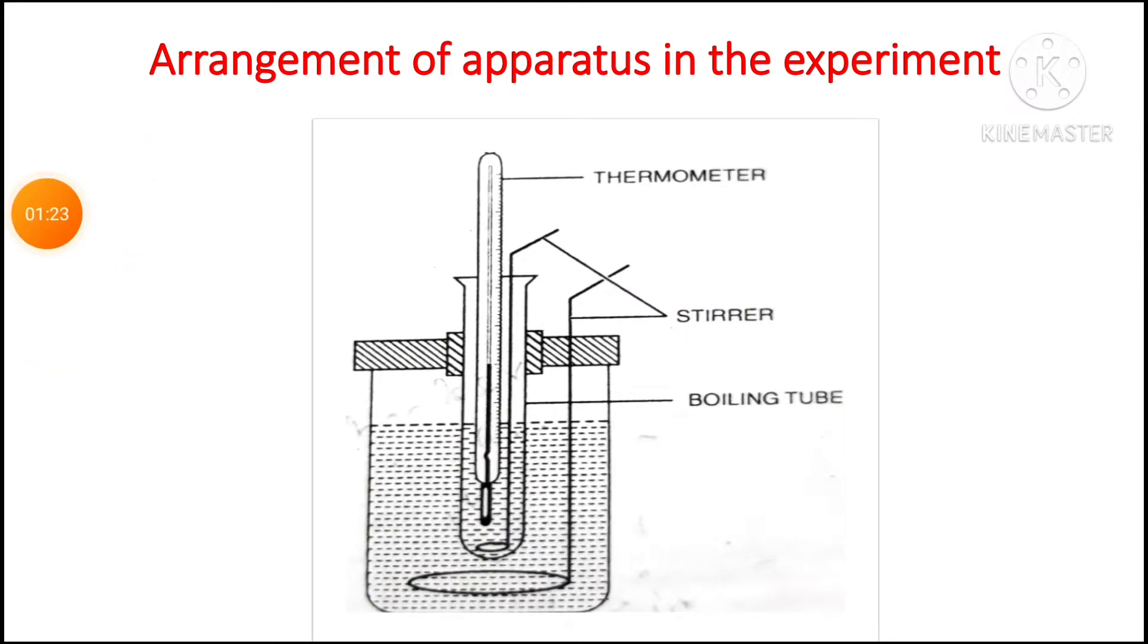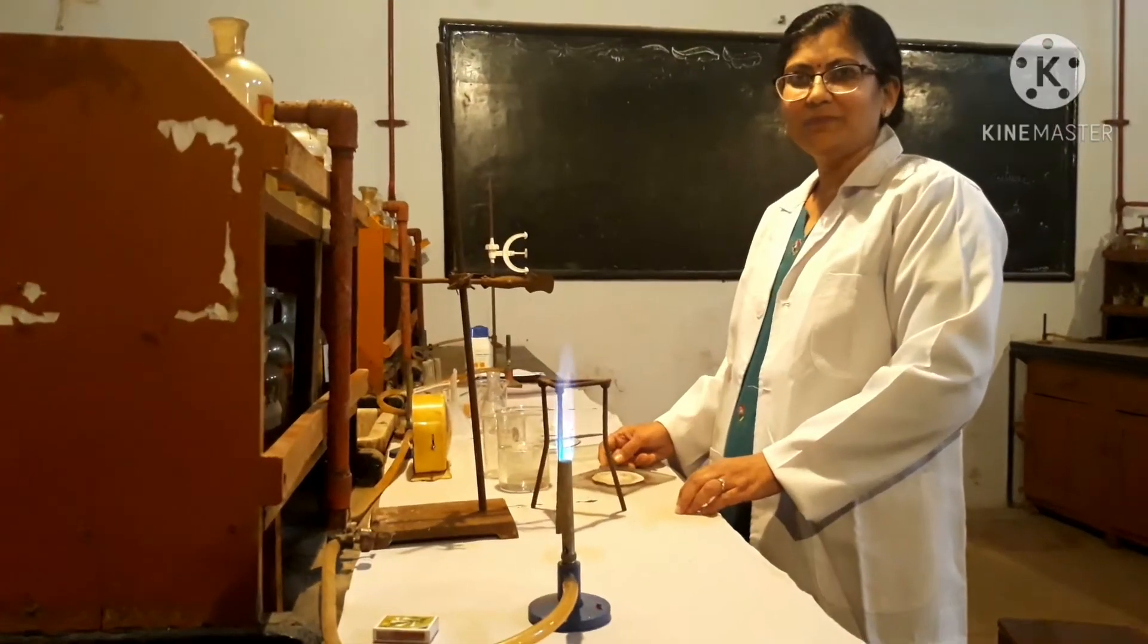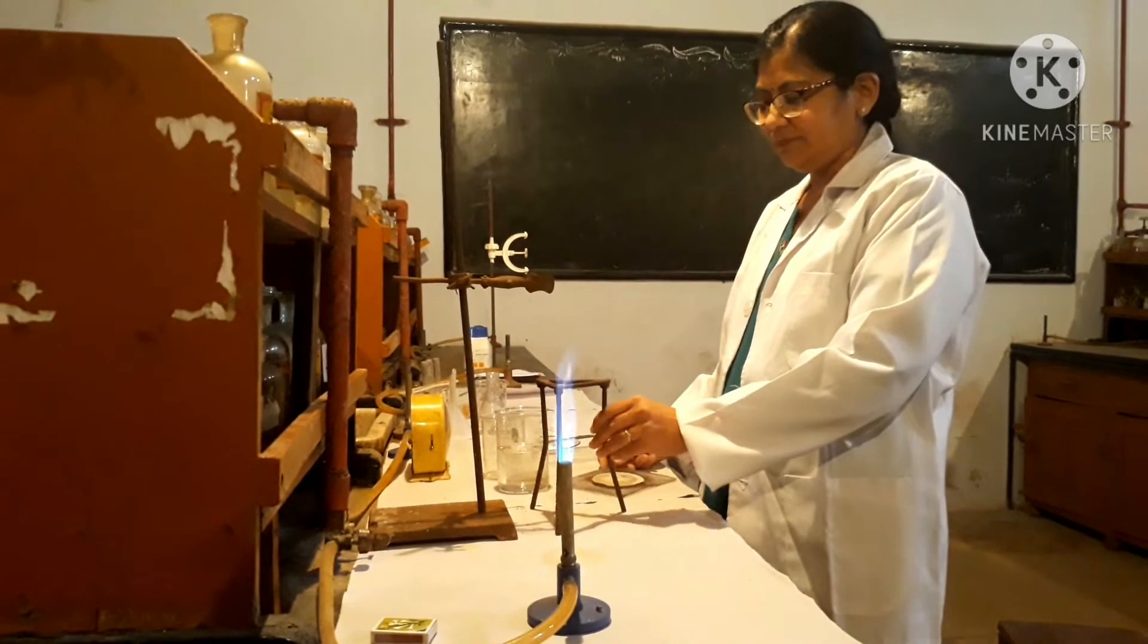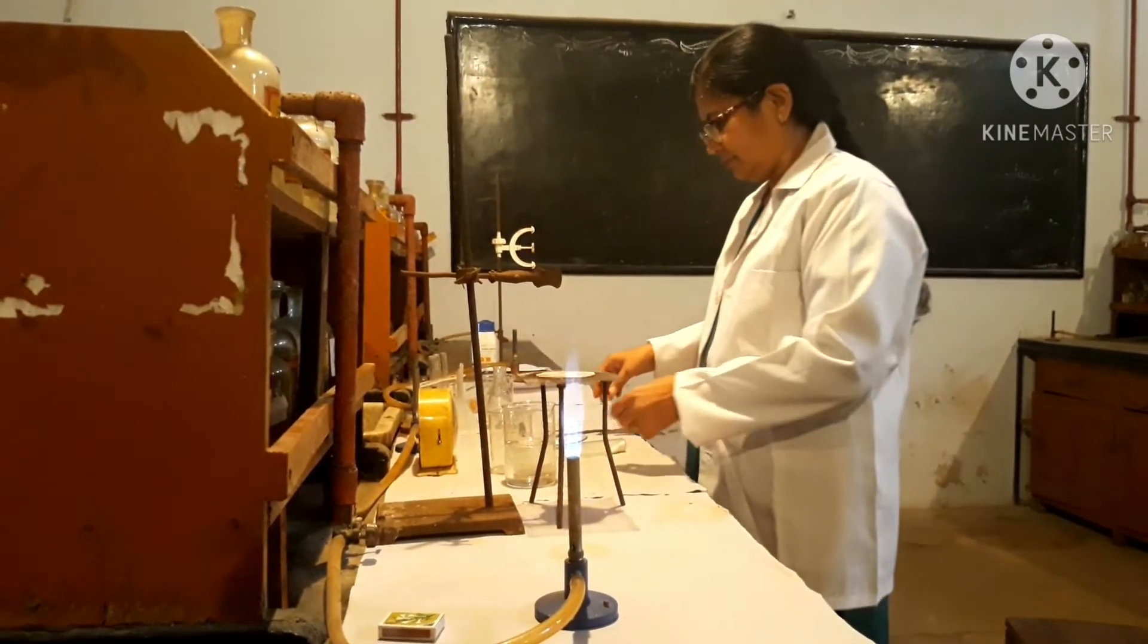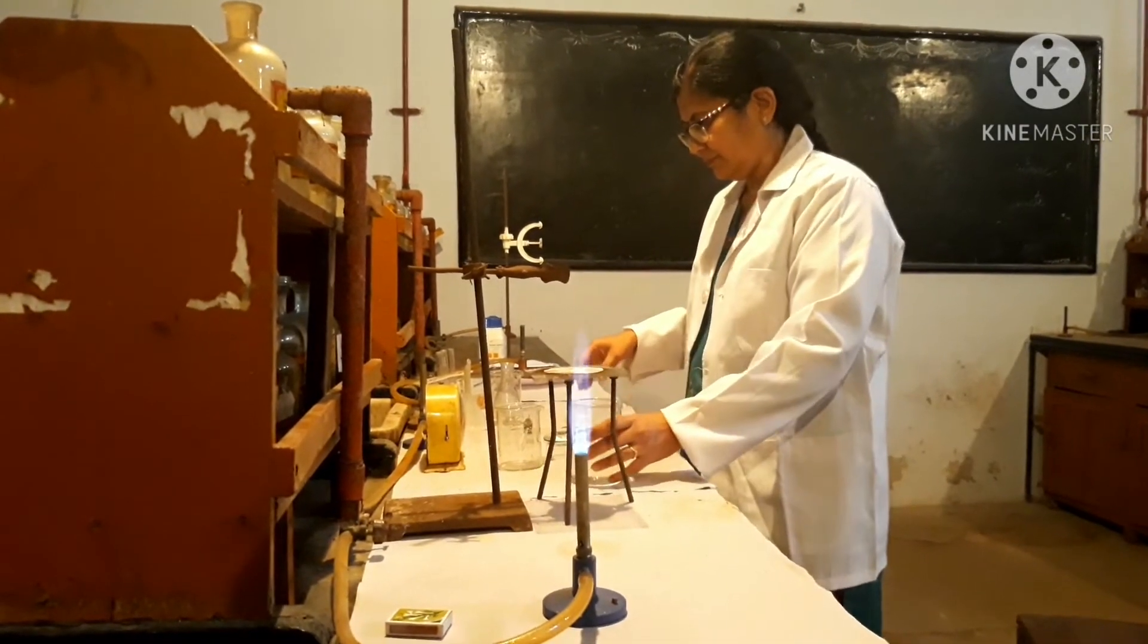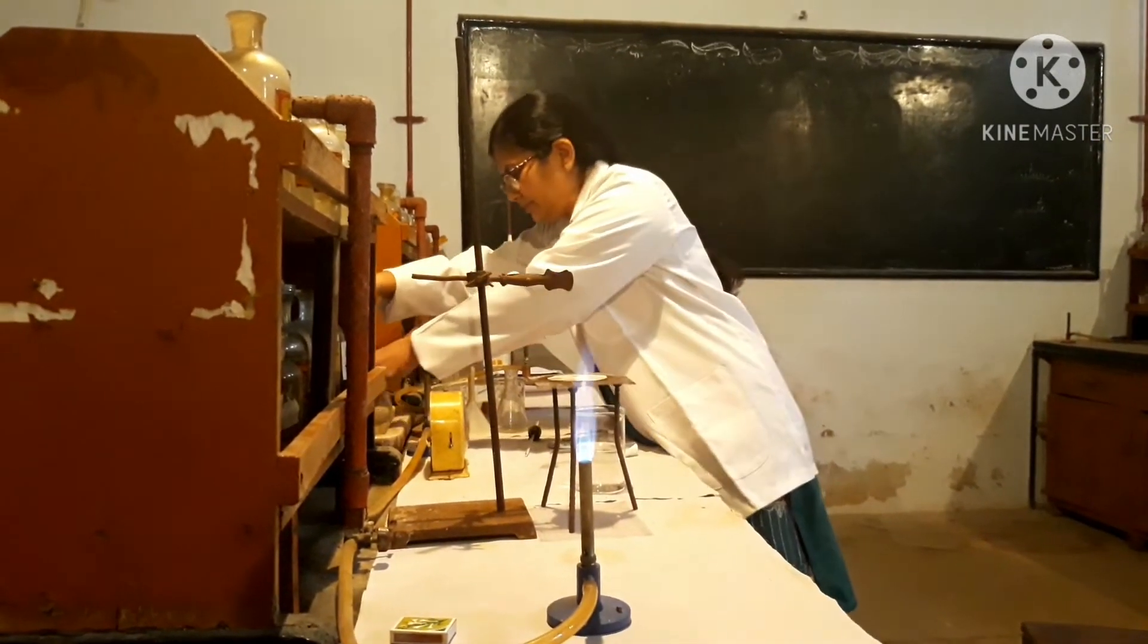This is our arrangement of apparatus in the experiment. Take tripod stand and put wire gauge on it. Fill the 400 ml beaker with approximately 300 ml of water.